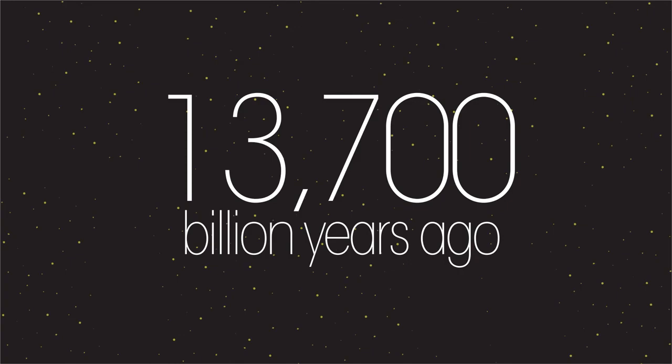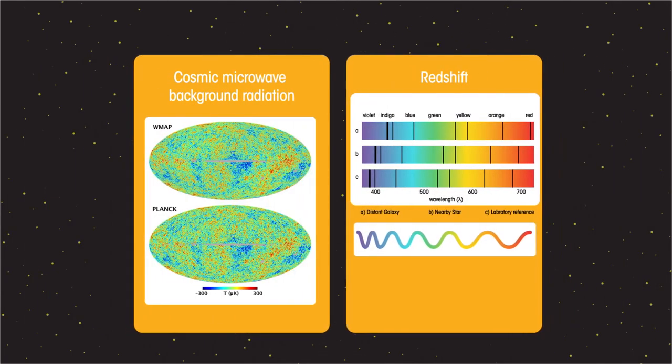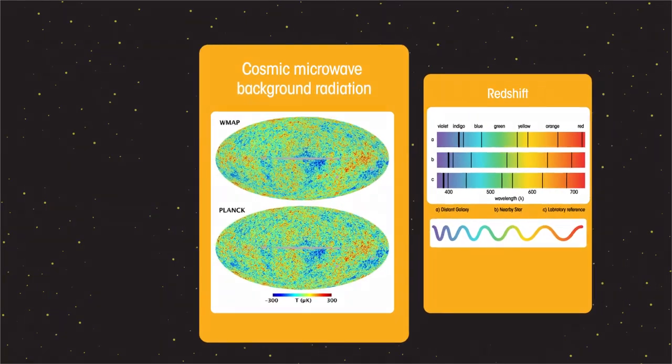There are two pieces of evidence for the Big Bang: Cosmic Microwave Background Radiation and Redshift.